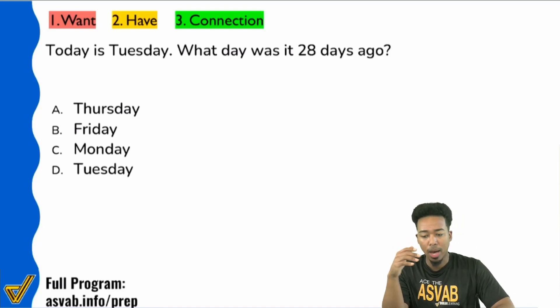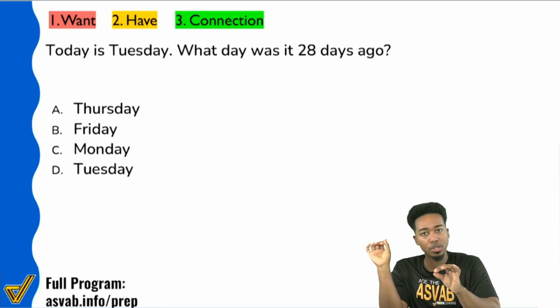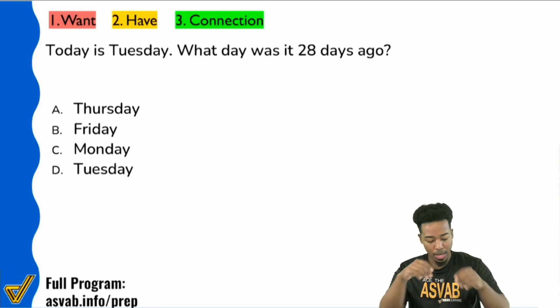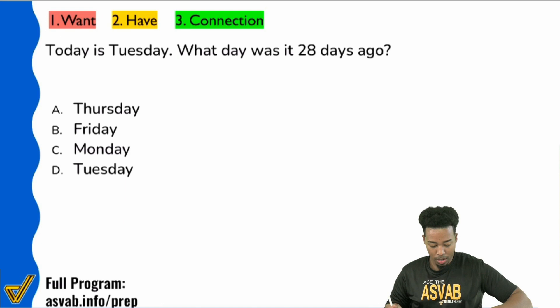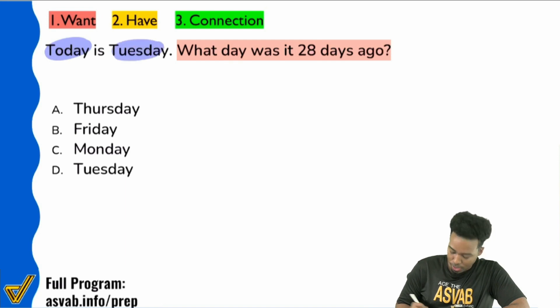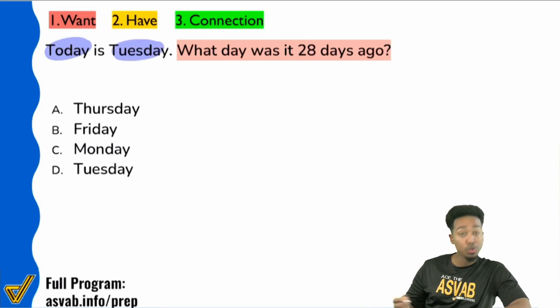I'm going to show you how to do this question again and show you different variations of this question. This one's actually really convenient, but if we change the number to something slightly different it might change the way you look at it. Let's take a look at this question here. What day was it 28 days ago, and we know that today is Tuesday.